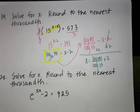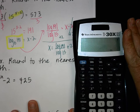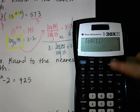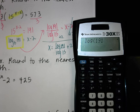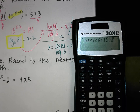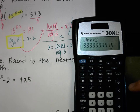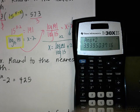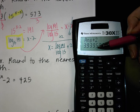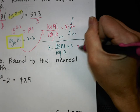Using the calculator, type log(191) divided by log(15), then add 2. Rounding to the nearest thousandth, the answer is X equals 3.94.